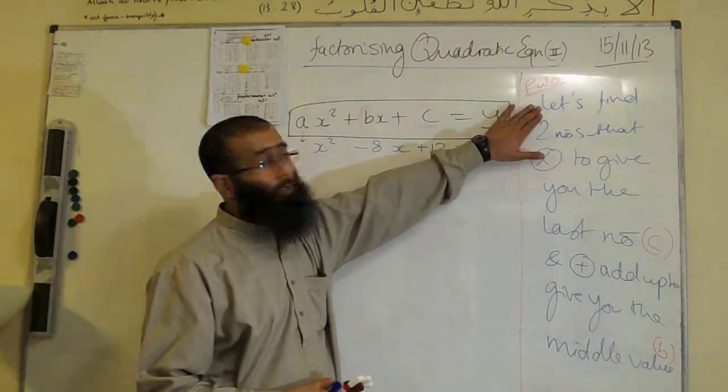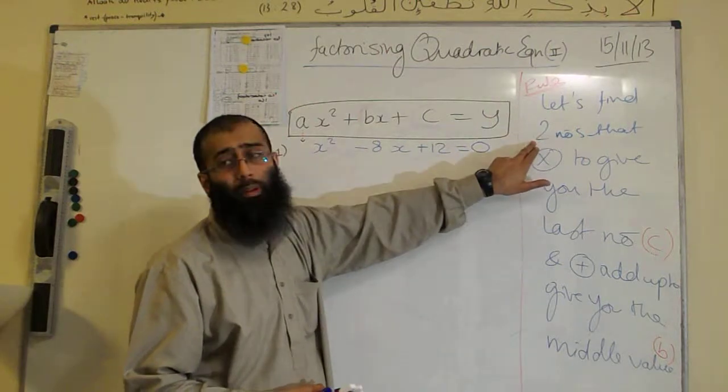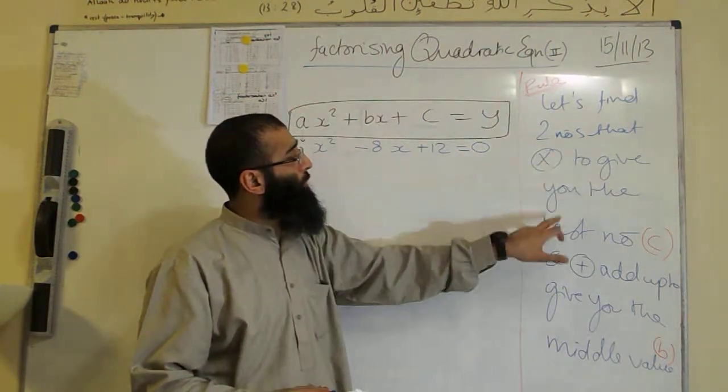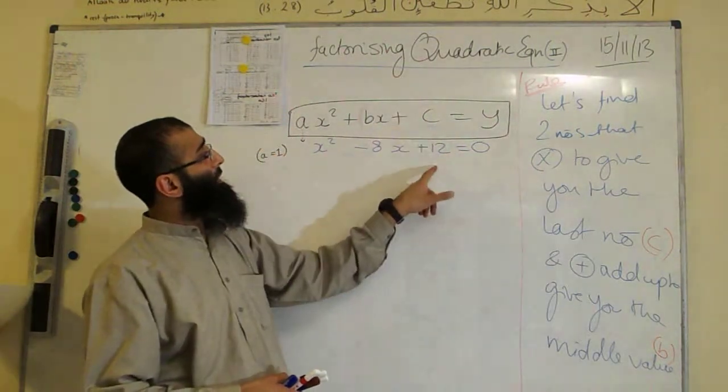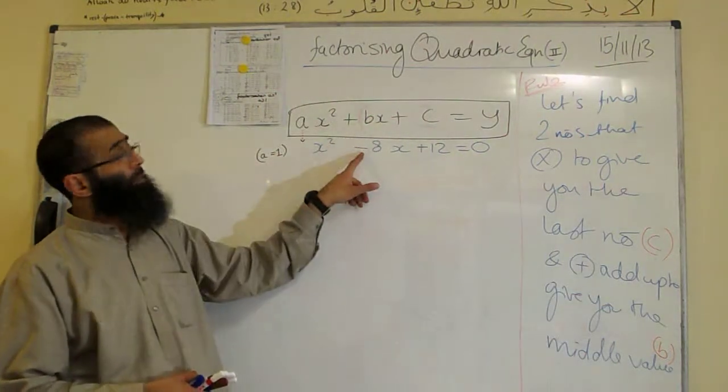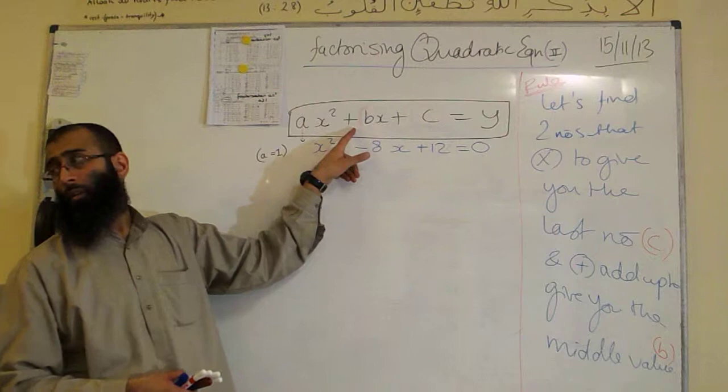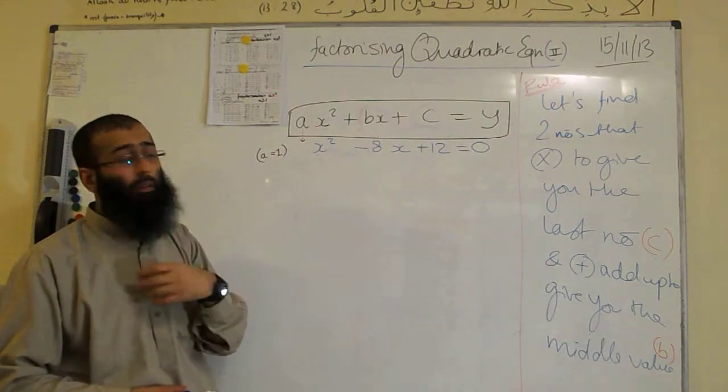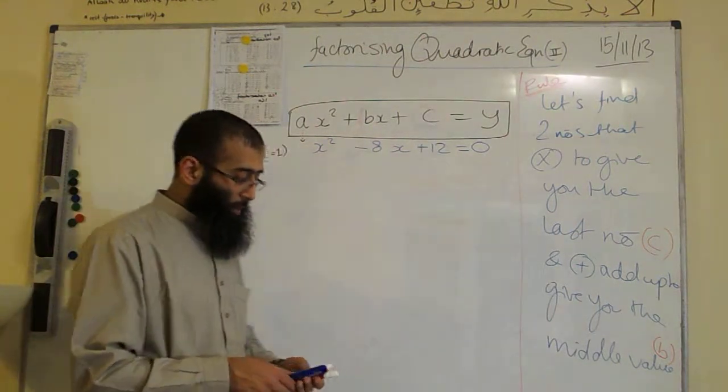Just to refresh ourselves, we're looking for, trying to find two numbers that multiply to give you the last number, which is the c value in this case, and add up to give us the middle value, which here is minus 8, which is the b value. So that's the technique that we're going to be doing now.